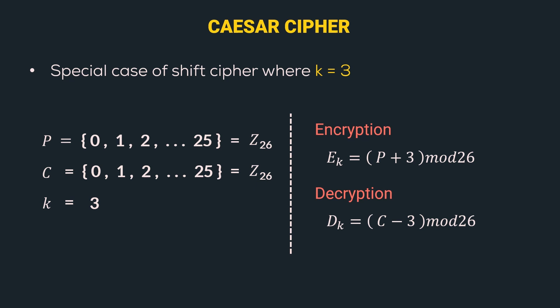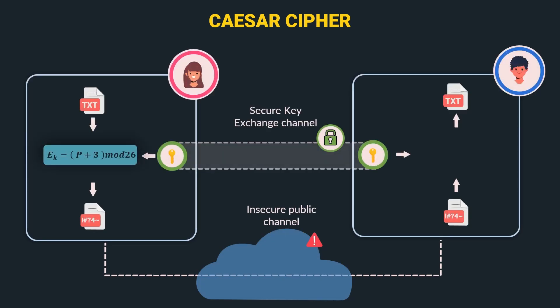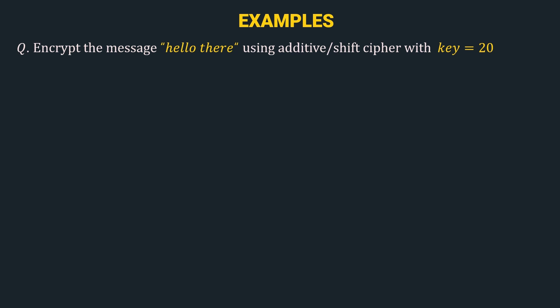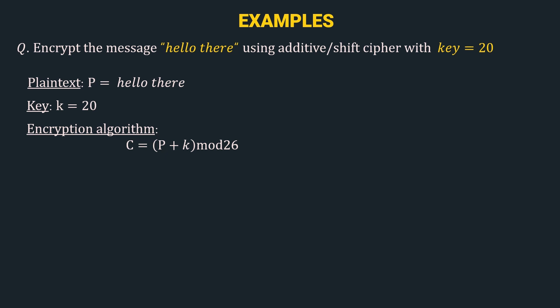Let's have a look at the diagrammatic representation of Caesar cipher. The encryption algorithm is E(k) = P + 3 mod 26 and the decryption algorithm is D(k) = C − 3 mod 26. Now let's have a look at some examples to understand both these ciphers better. The first example is: encrypt the message 'hello there' using additive or shift cipher with key 20. Here the plain text P is 'hello there', key K = 20, and encryption algorithm is C = P + K mod 26.